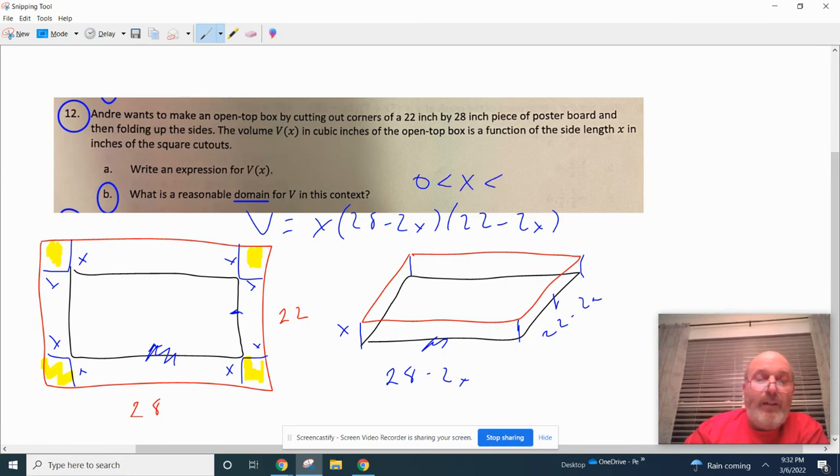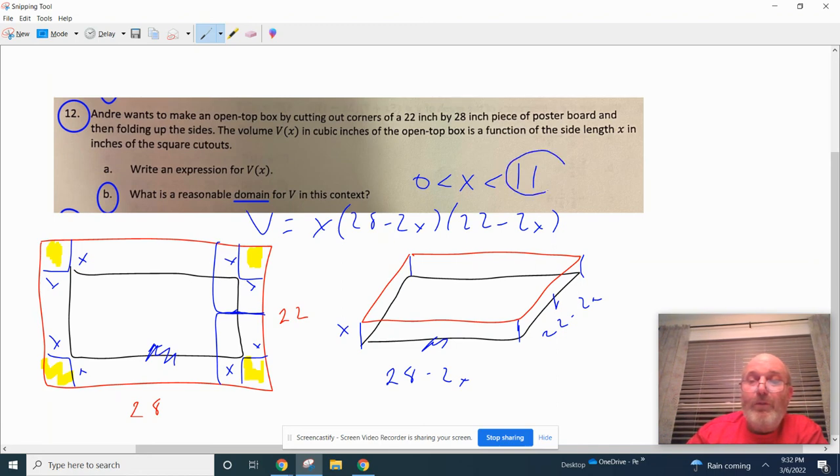So our domain is going to be 0 is less than X and that's going to be less than the biggest we could cut out here, which would be half of the shorter side and that wouldn't leave us a box. So we have to cut out something smaller than 11 in this case. So our reasonable domain is from 0 less than X less than 11.